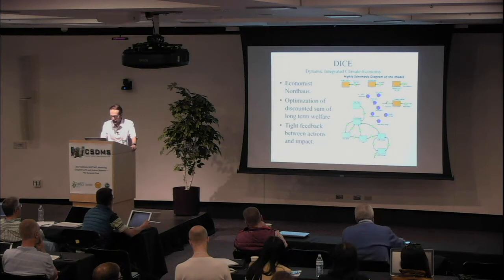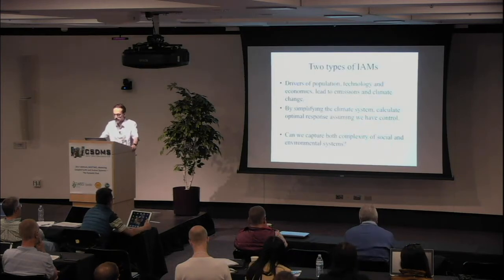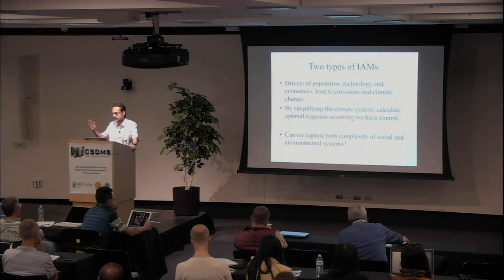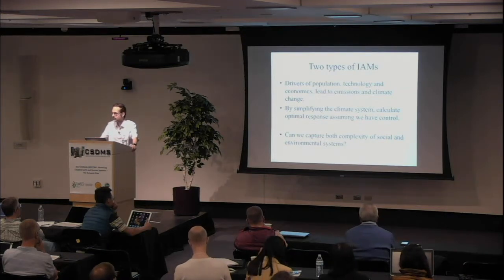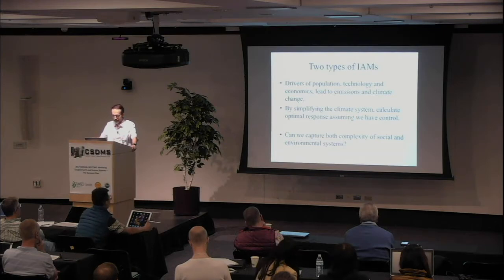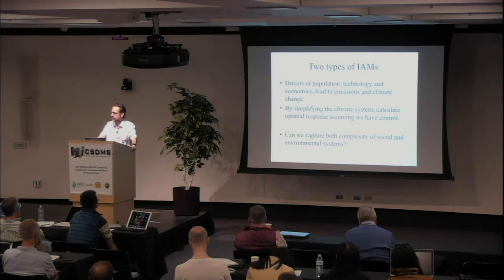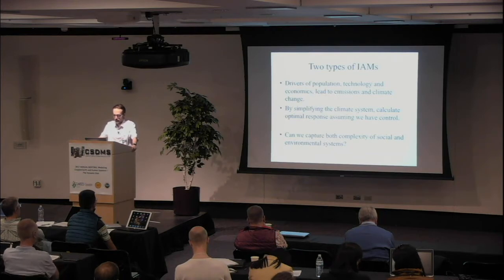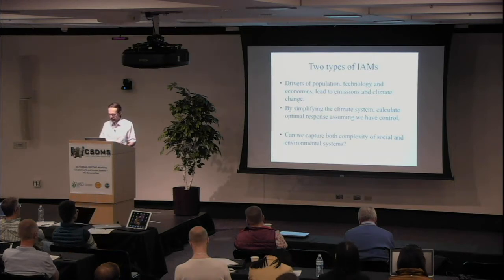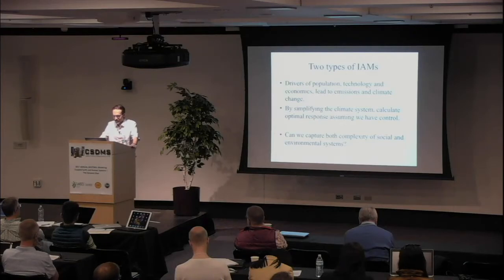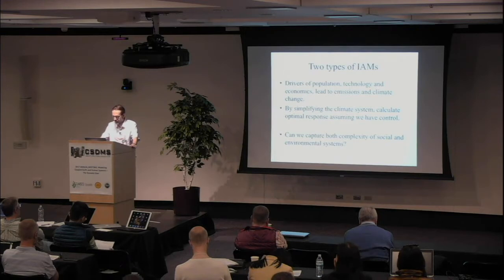These two types of integrated assessment models started in the 1990s, and I think they still have the same issues today. When we had a meeting a year ago it was a kind of déjà vu from my dissertation work — twenty years later, still the same debate between people working on the human components and on the natural science components. Can we capture the complexity of both the social and environmental systems? I think there are a lot of reasons why this divide still exists, and it has a lot to do with the interaction between different disciplines.